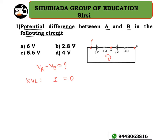Now, as the direction of the current is in this fashion, from higher potential to lower potential, it is 8I and 2 times I. So the equation becomes: 6 volts minus 2I plus 4 volts minus 8I equals zero.